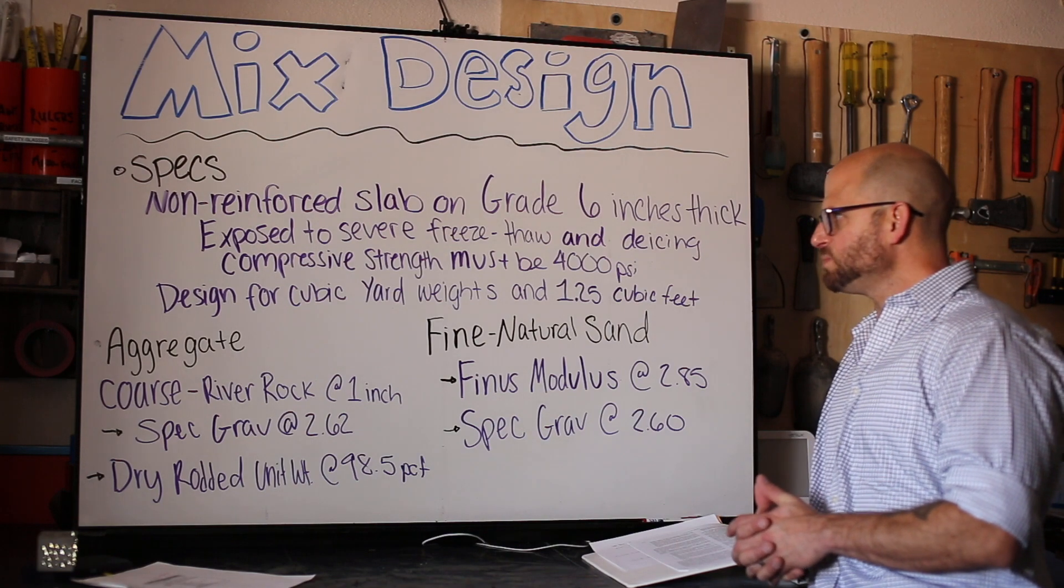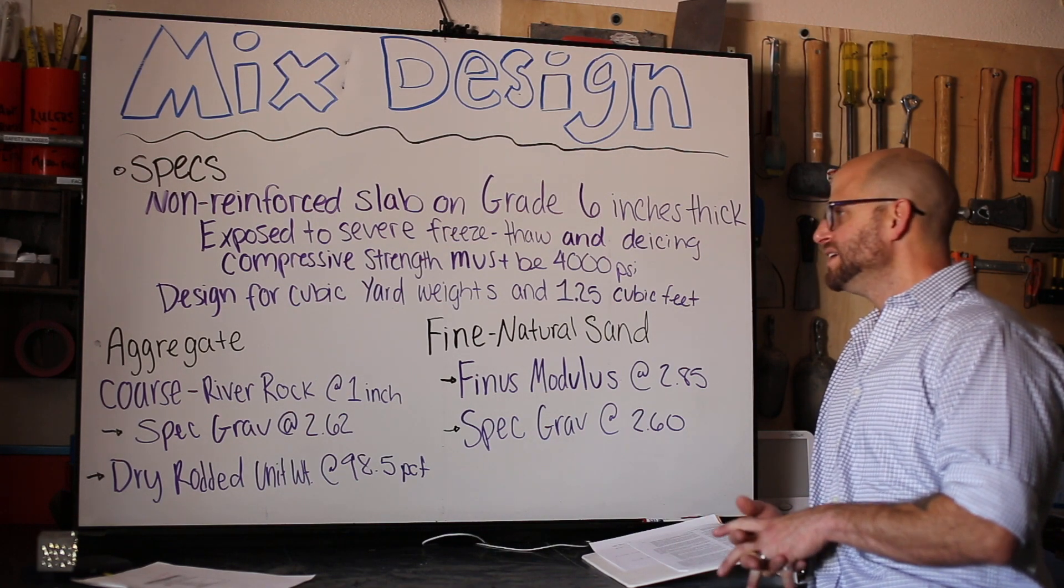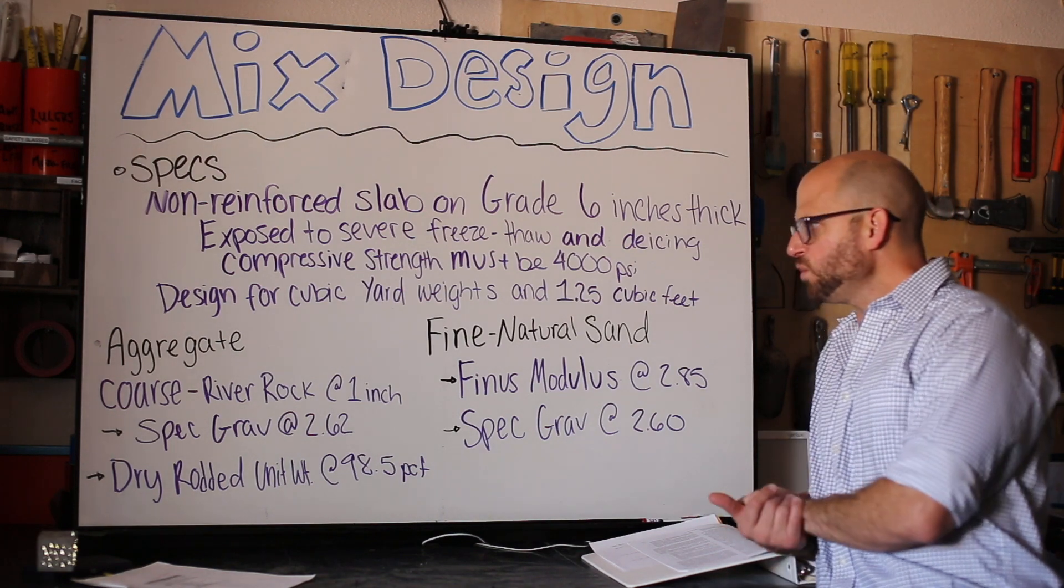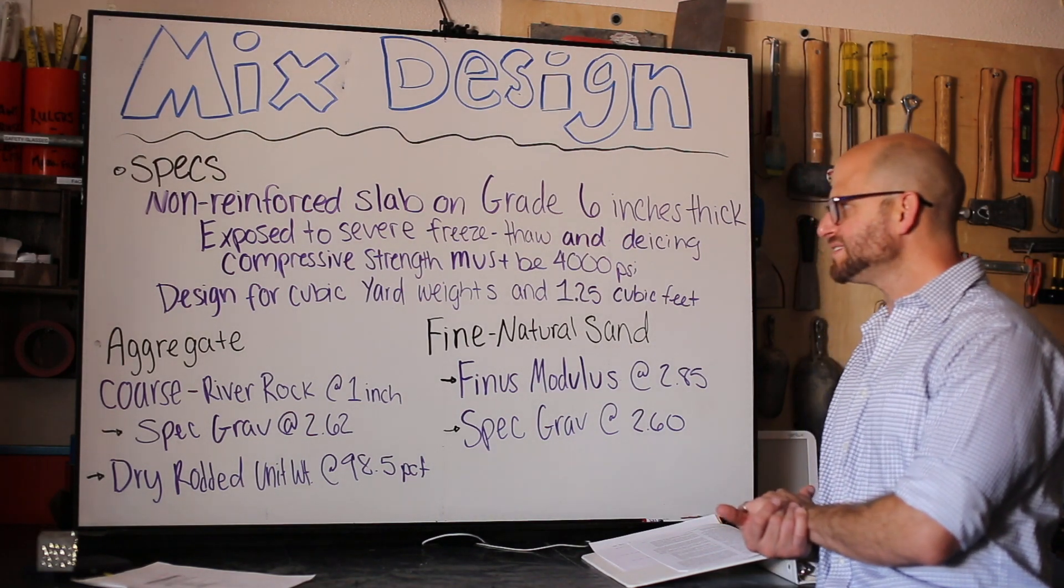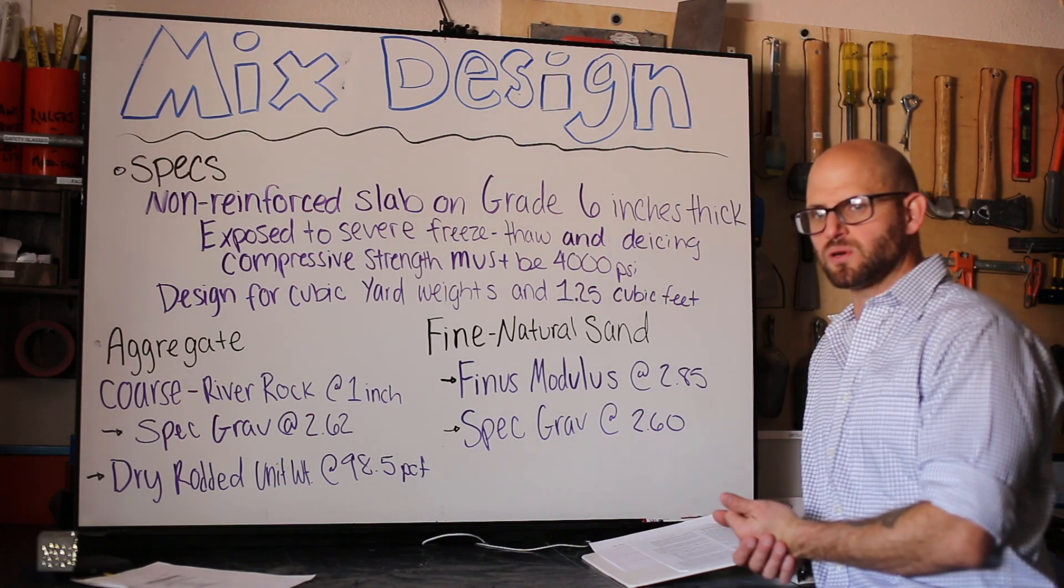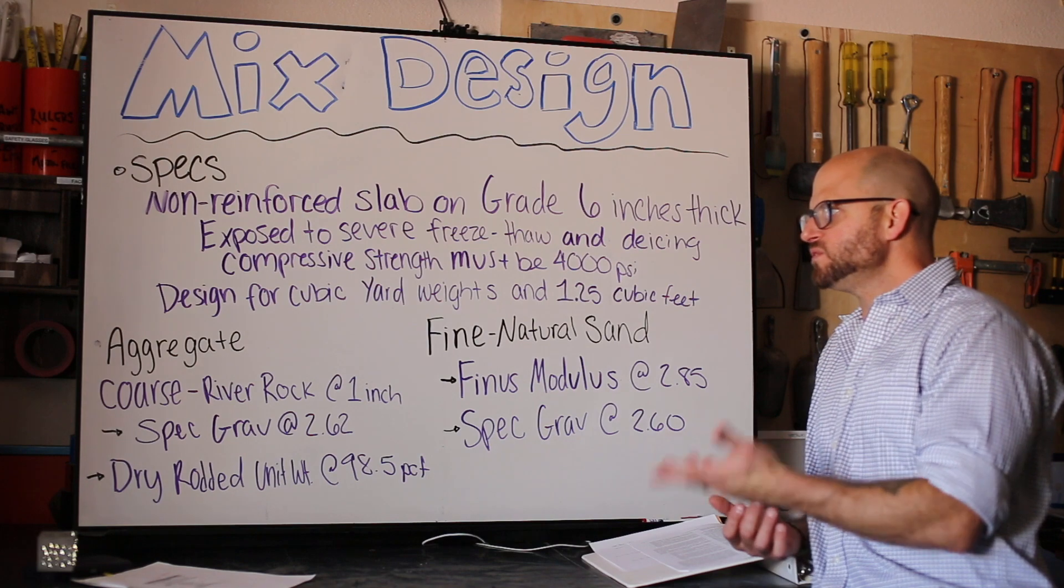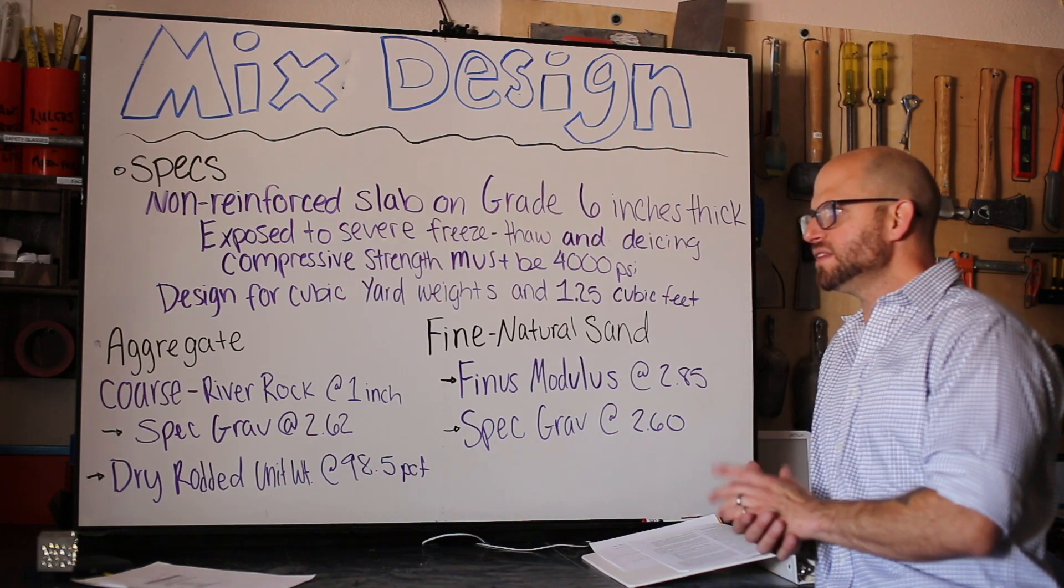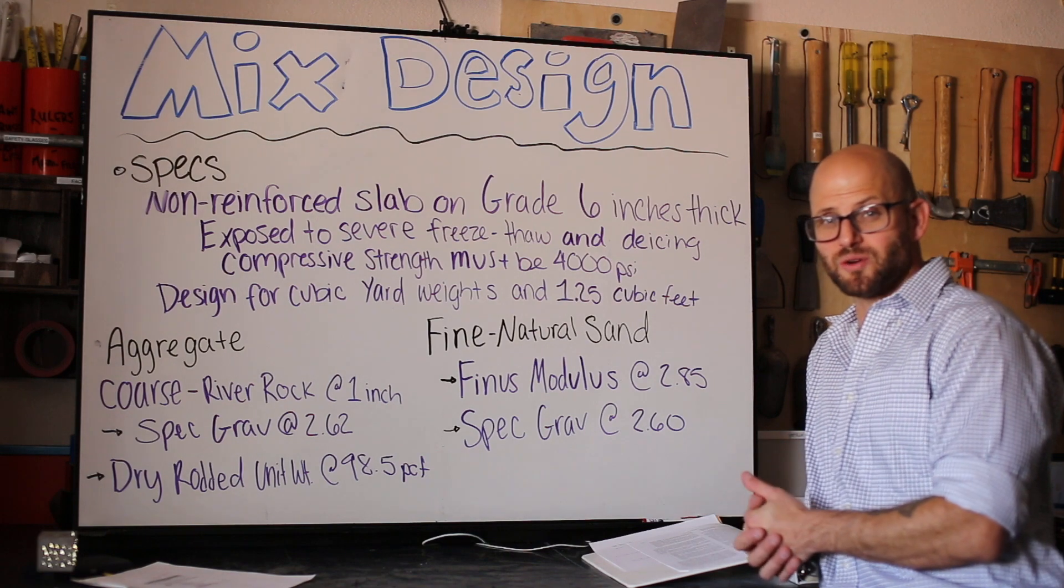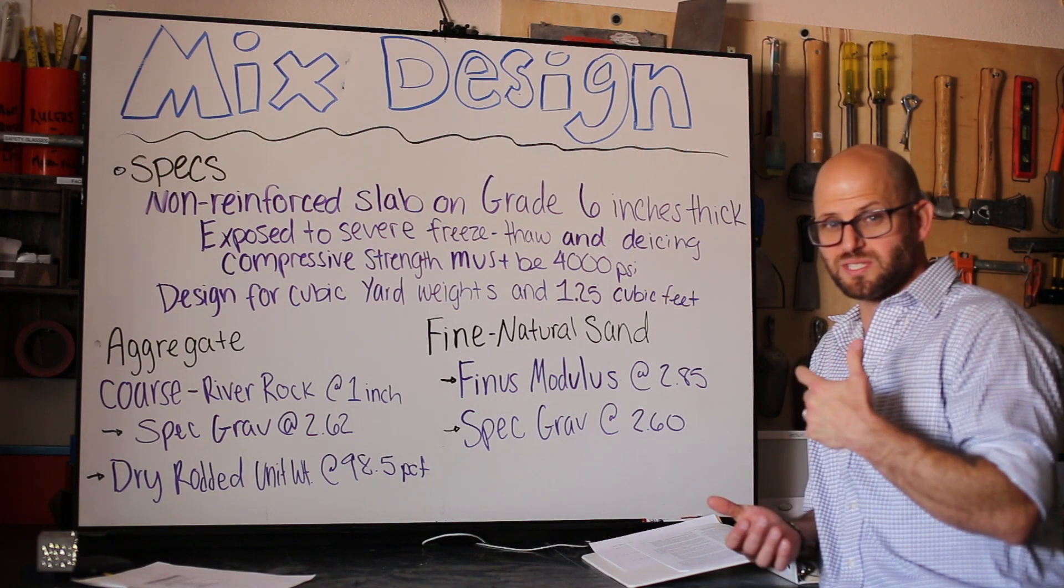Let's start with the mixed design. We've got a non-reinforced slab on grade six inches thick, exposed to severe freeze-thaw and de-icing salts. We've got to have an f prime c of 4,000 psi at 28 days and we've got to design for a cubic yard. This is probably your 80 percent workhorse. This is most of the concrete that's going down, or a large portion of the concrete that's going down.